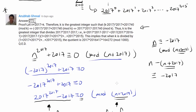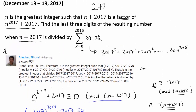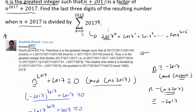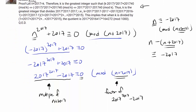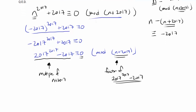We wish to maximize the value of n plus 2017, because n is the greatest integer. So we wish to find the greatest possible value of n plus 2017 such that n plus 2017 is a factor of 2017^2017 minus 2017. The easiest way of doing that is by letting n plus 2017 be the greatest possible factor of this expression, which is itself: 2017 to the 2017 power minus 2017.